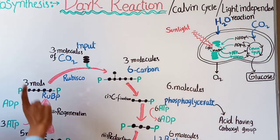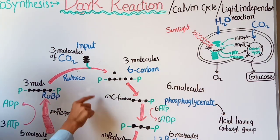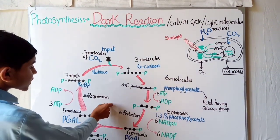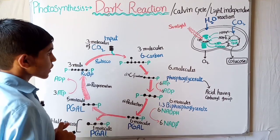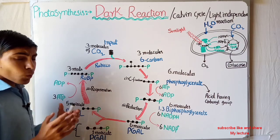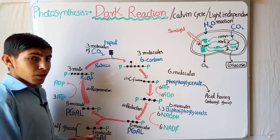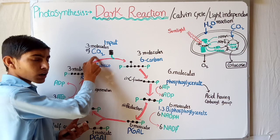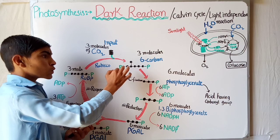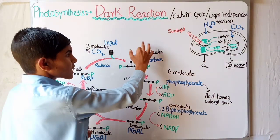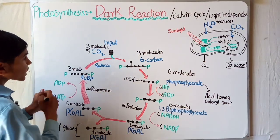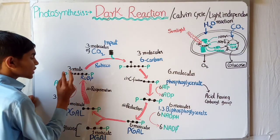The dark reaction is a cyclic pathway, so it is also called cyclic photosynthesis. The input of this process is CO2, which comes from the atmosphere. The plant inhales CO2 through the stomata in the leaves, and then this CO2 moves through the plant cells — the mesophyll — and then enters the stroma of the chloroplast.